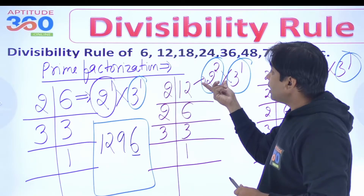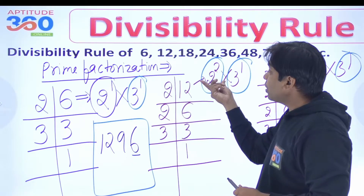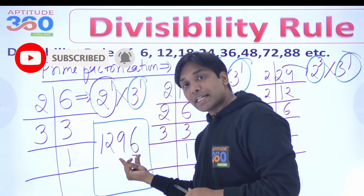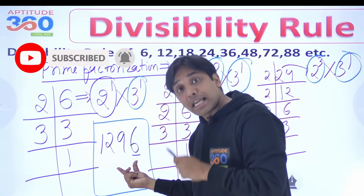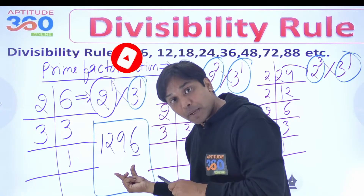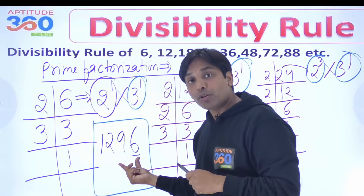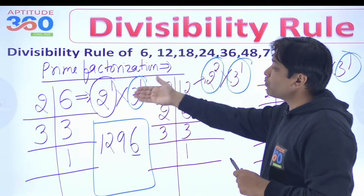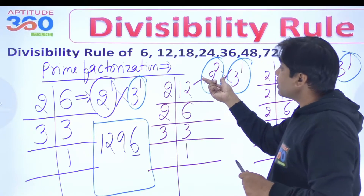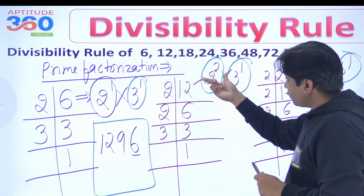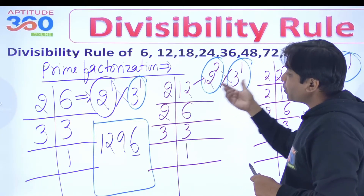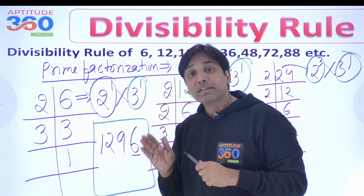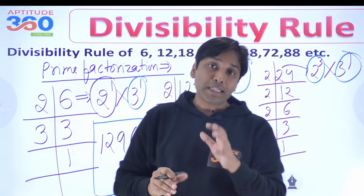Now how about 4? For 4, we check the last two digits which is 96. Is 96 divisible by 4? Yes it is. And the sum of digits is divisible by 3, which we have just checked. Because this number is divisible by 4 and 3, the number 1296 is going to be divisible by 12 also.